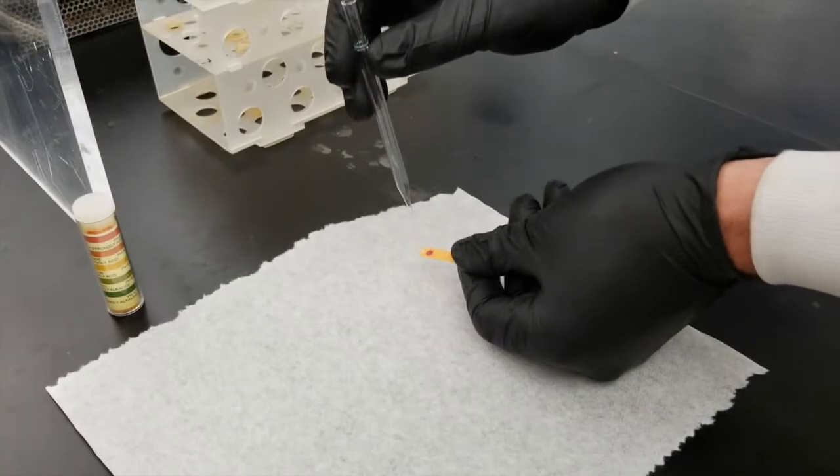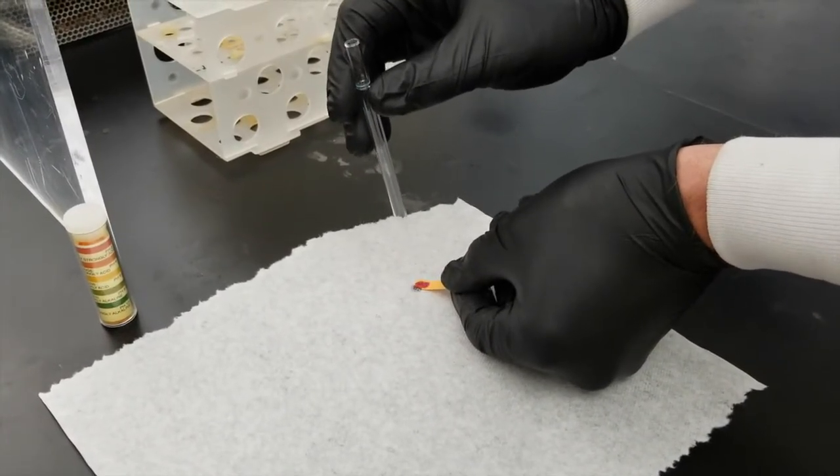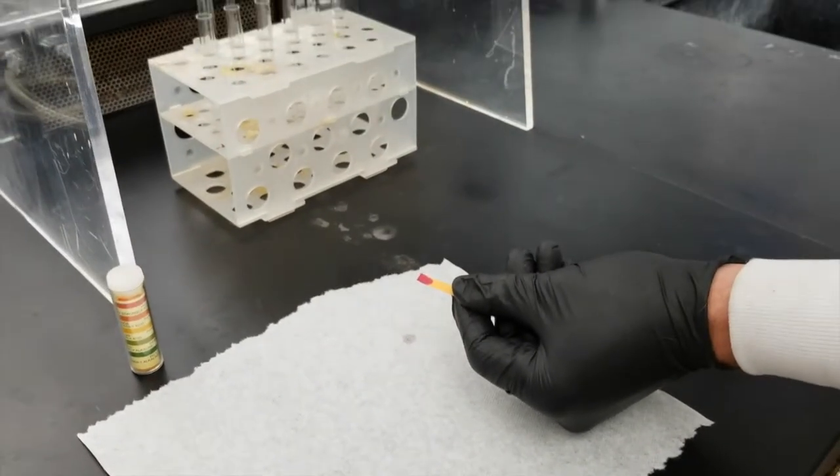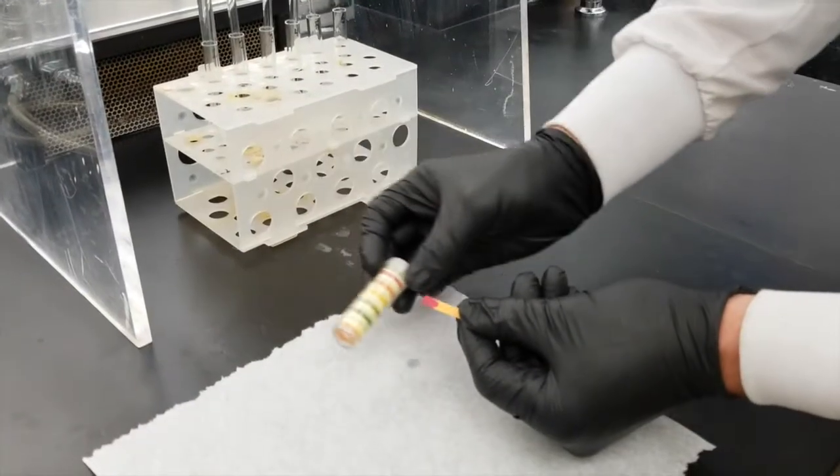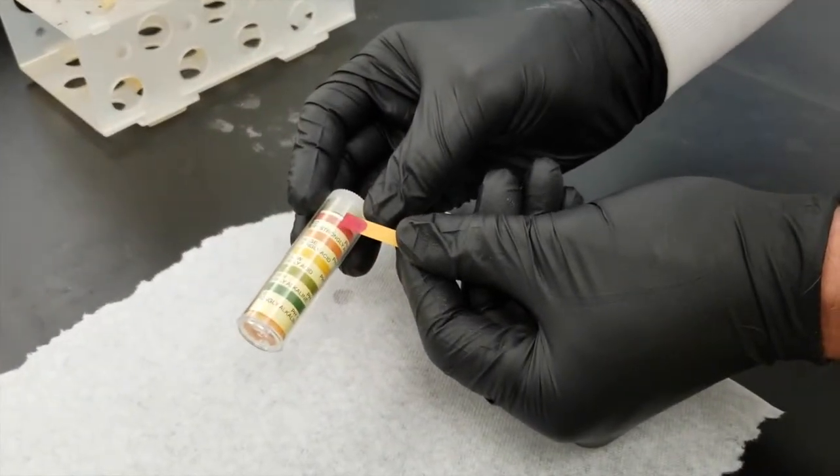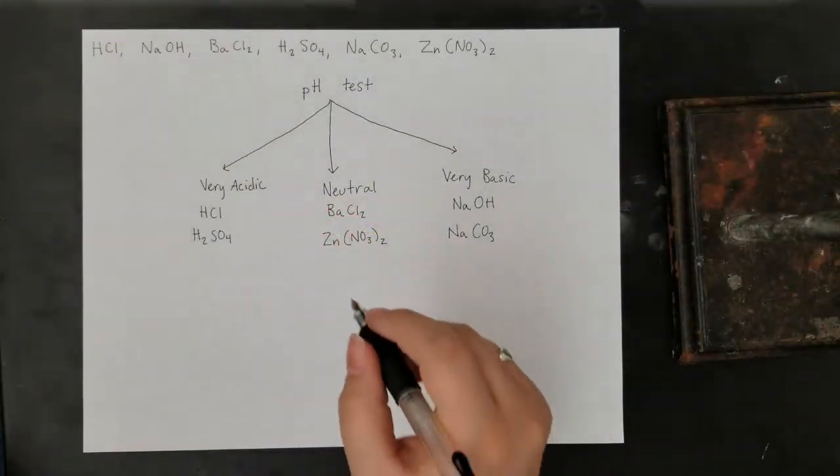Note that with a pH test, you're only going to be able to identify things that are very basic or very acidic, so even though some of these other things might be a little bit basic or a little bit acidic, they'll be difficult to tell apart.